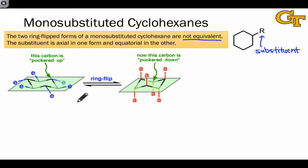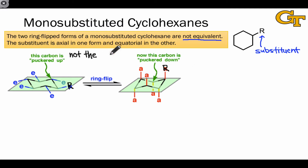Because the ring flip moves equatorial positions into axial positions and vice versa, a substituent that's equatorial in one of the chair conformers becomes axial in the other chair conformer. The resulting chair structures are not the same. Because the R group is located in an axial position in one and an equatorial position in the other, we can't overlay these perfectly, indicating that they're different structures.